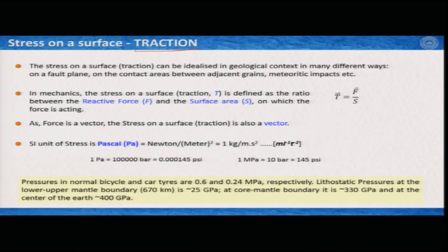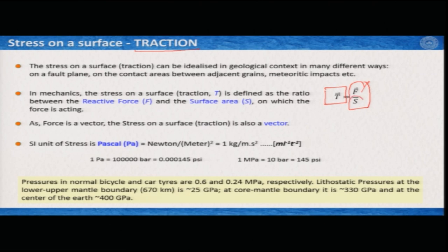The stress on a surface, or traction T, is defined as the ratio between the reactive force F and the surface area S on which the force is acting. Therefore traction T = F/S. Because force is a vector, the stress on a surface or traction must be a vector as well. And because we are dividing Newton by area, the unit of stress is Newton per meter squared.